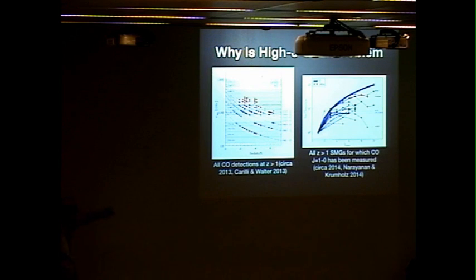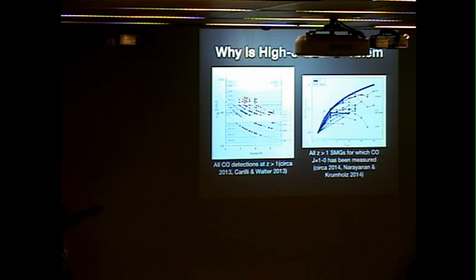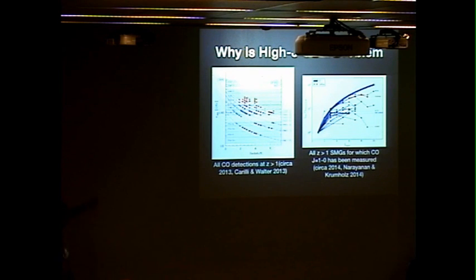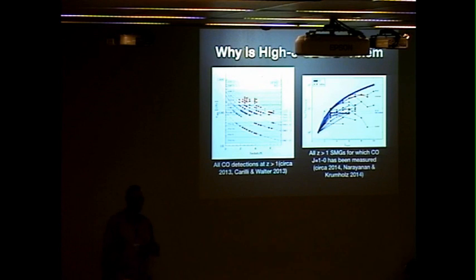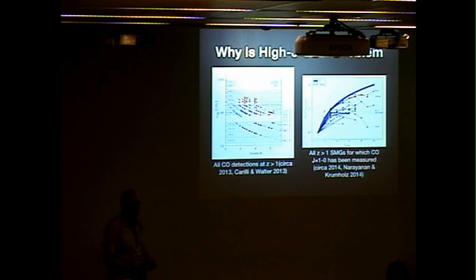Here is all of the high-z CO detections circa 2013, made by Carilli and Walter. The red is quasars; for normal star-forming galaxies — that's blue — there's really not a lot of data, and what there is certainly doesn't cover the full CO ladder. So you're going to have maybe one or two high-J CO lines, and you want to convert that to CO(1-0) to put it on the same plot as local data. What you do is say: I will use a template spectral line energy distribution to do that.